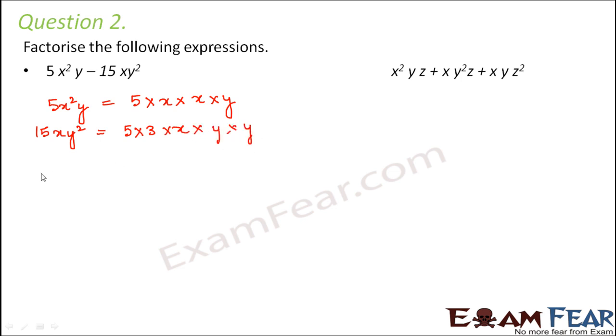Therefore 5x²y - 15xy² can be written as 5×x×x×y - 5×3×x×y×y. So what are the common factors? 5xy. These are the common factors, so let's take them out.